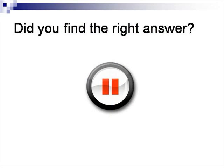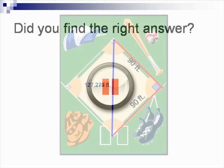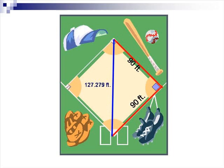Did you find the right answer? Pause the video now and discuss how you solved this problem with a partner. The right triangle formed from home, first, and second base has a hypotenuse of 127 and 279 thousandths, or about 127 feet, 3 and 3 eighths inches. This is the distance a catcher would have to throw from home plate to second.